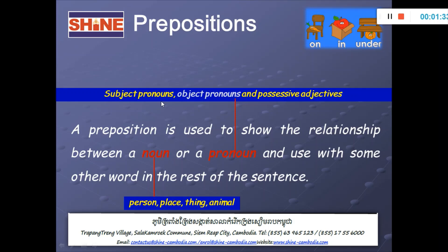You already know, so when I show you the words, subject pronoun is like this: object pronoun and possessive adjective. Let's see what are subject pronouns. Remember, we always write the subject pronoun as the first word in the sentence. I, you, we, they, he, she, and it.